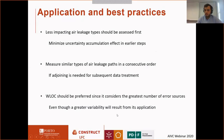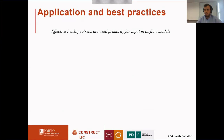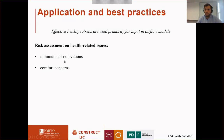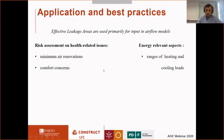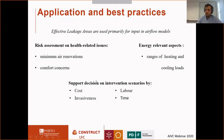The weighted line of organic correlation should be preferred since it considers a larger number of error sources. Even though there is greater variability, the results of its application are truer and more representative. Effective leakage areas are primarily used in airflow models, and this uncertainty assessment can be used in risk assessments of minimum air renovation rates, comfort concerns, and energy-relevant aspects such as heating and cooling loads. This supports decisions on intervention scenarios by cost, labor, invasiveness, and time.